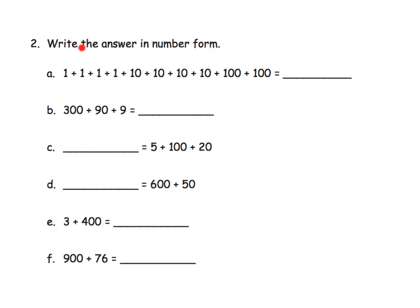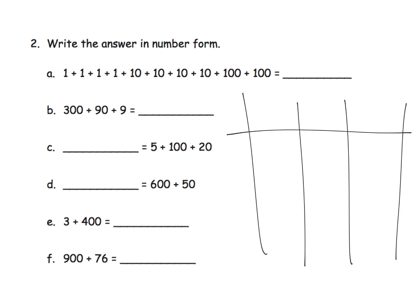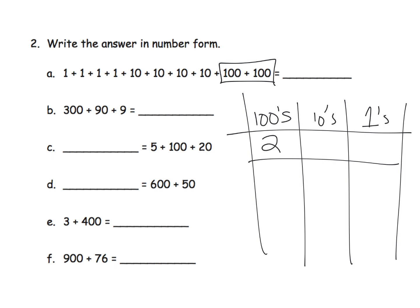Here it says write the answer in number form. I'm going to do a shortcut for parents and teachers — I would not do this with my students. I'm just going to write 1s, 10s, and 100s. Let's take a look at this number right here. We can see that we have 2 in the 100s column, so that's 200. And then we have 10, 20, 30, 40 — so we have 40, which means we have 4 in the 10s column. And then, unfortunately they used the number 4 again, we have 4 in the 1s column. So if we wanted to write this in number form, we would have 244.